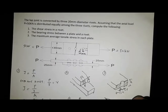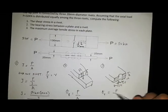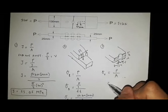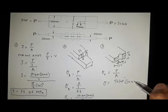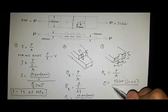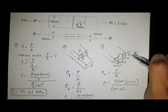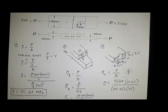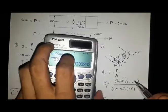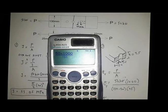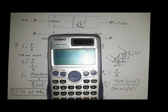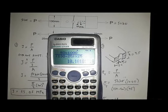The tensile stress equals P over A. By substitution, P equals 50 kilonewtons multiplied by 1,000, divided by an area of (130 minus 20) times the thickness of 25 mm. Therefore, the maximum average tensile stress equals 50 times 1,000 divided by (130 minus 20) multiplied by 25, which gives a maximum average tensile stress of 18.18 megapascals.